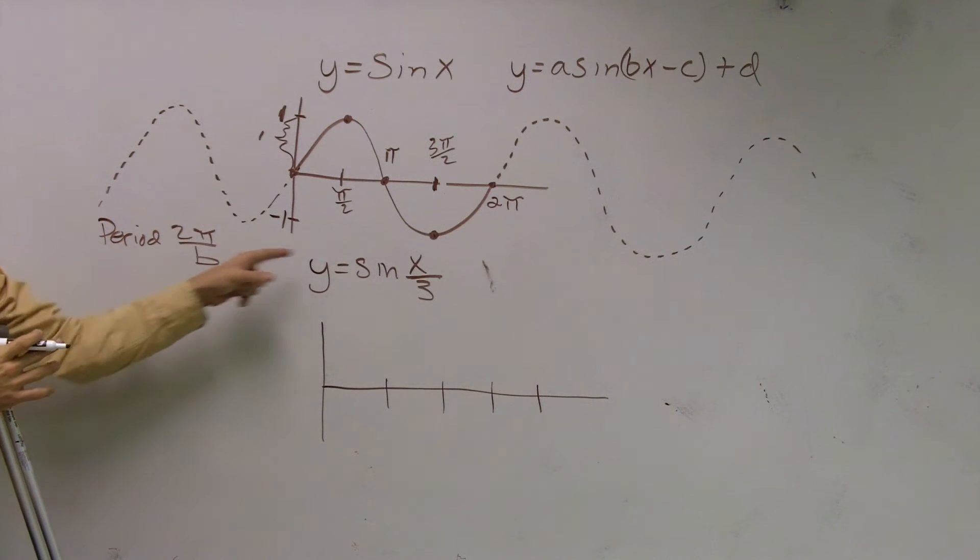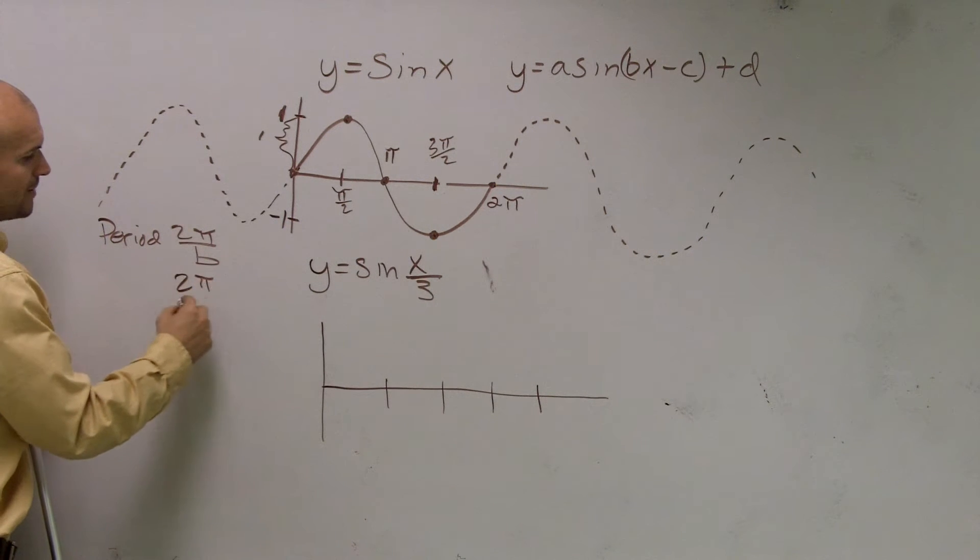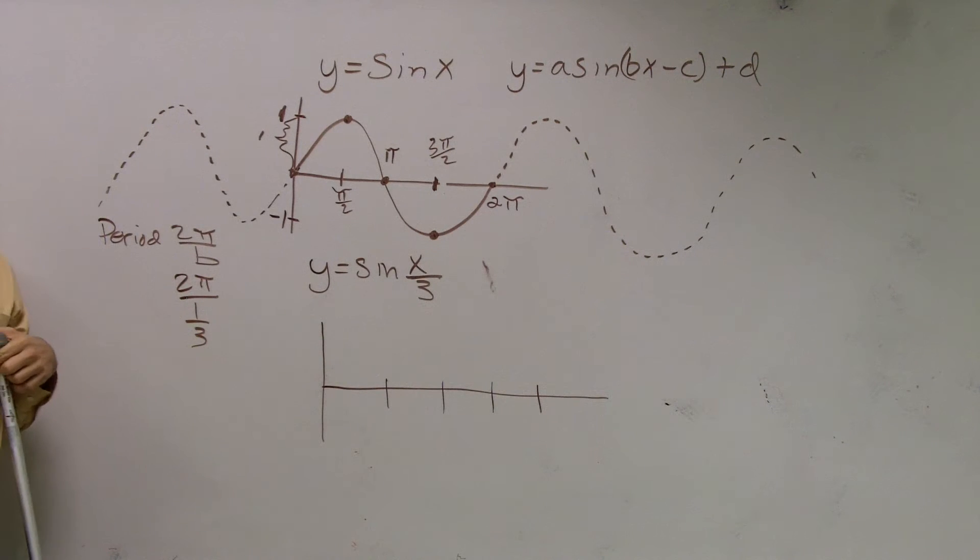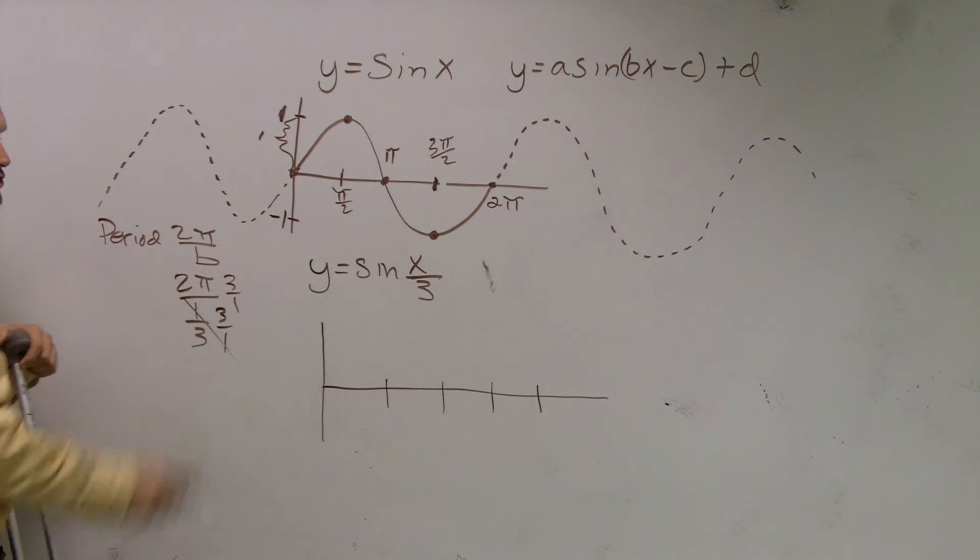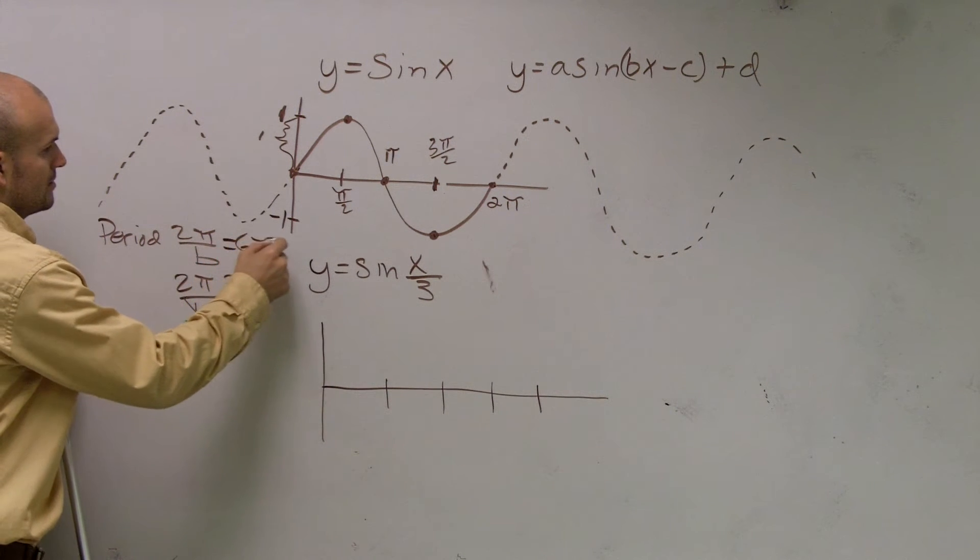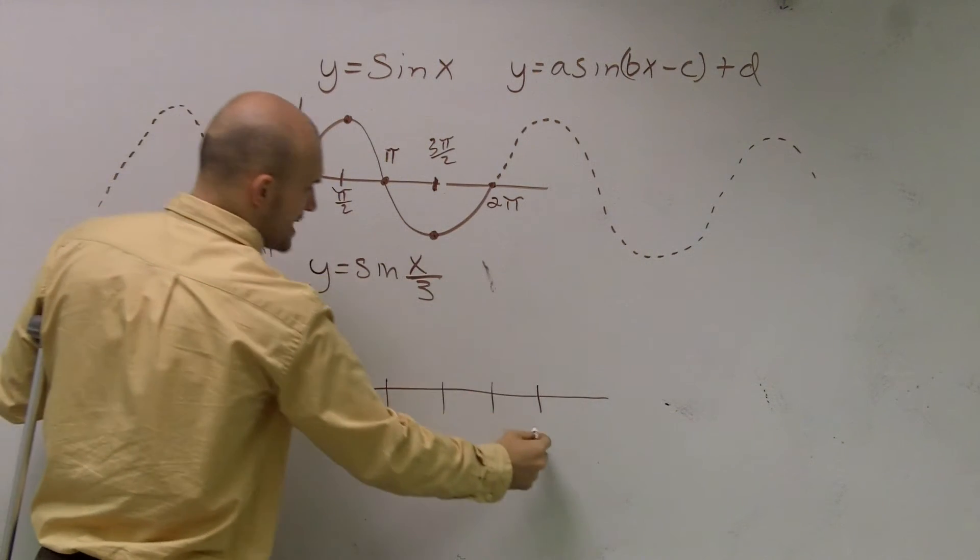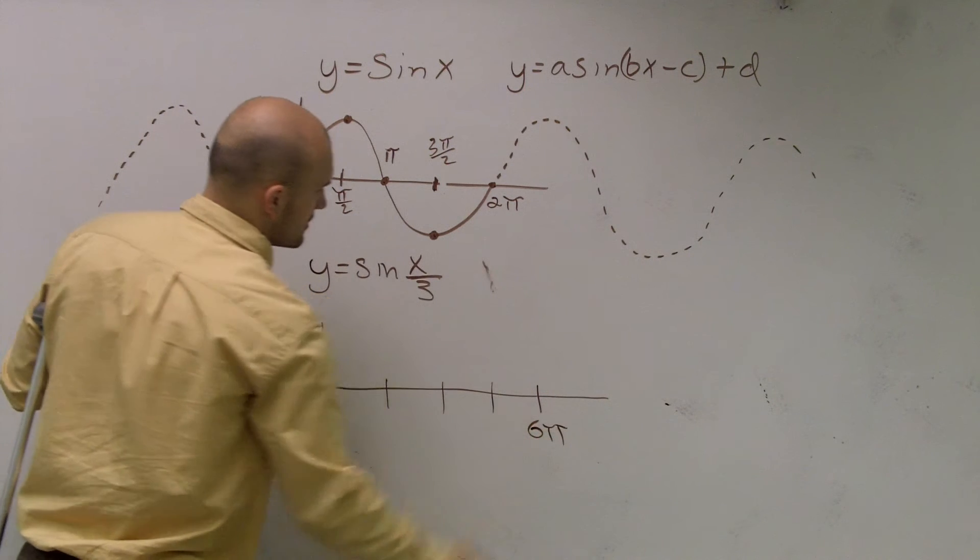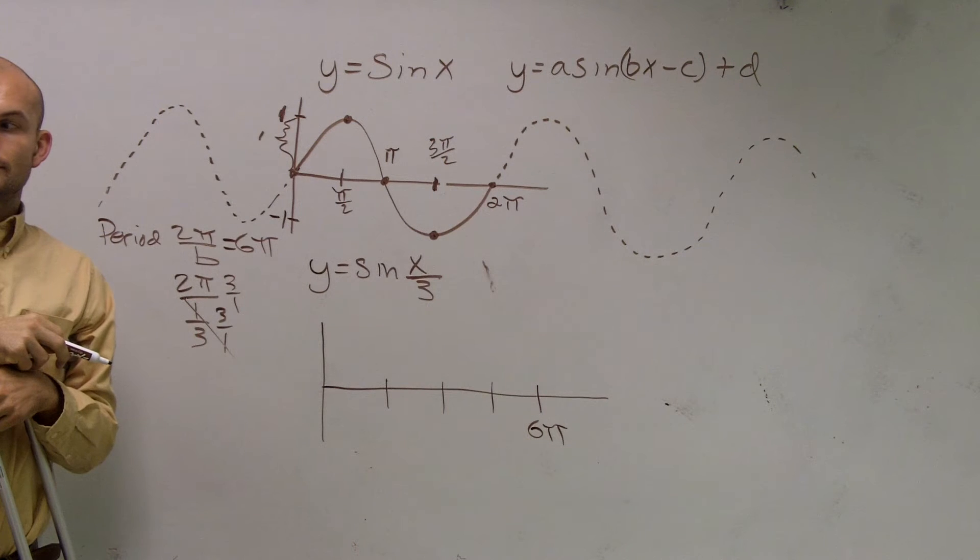So our b, if you look at this—remember, guys, I told you about x divided by 3 is the same thing as 1 third x—so this can be rewritten as 2π over 1 third. That's 6π. When you multiply by your reciprocal, that cancels out. You get 2π times 3 over 1. 2π times 3 is 6π. So that means instead of my last point being at 2π, it's now going to be 6π.